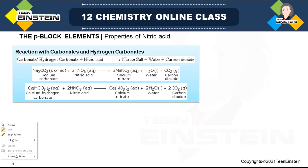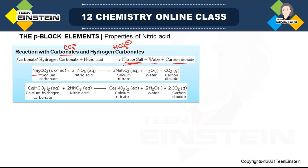HNO3 also reacts with carbonates (CO3²⁻) and hydrogen carbonates (HCO3⁻) to give nitrate salt, water, and CO2. For example, Na2CO3 + HNO3 → NaNO3 + H2O + CO2. Similarly, calcium hydrogen carbonate reacts to give calcium nitrate, water, and CO2. In both cases, metal nitrate and water are always produced along with CO2.